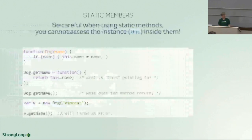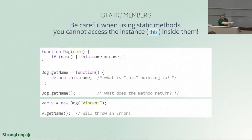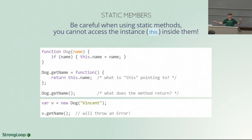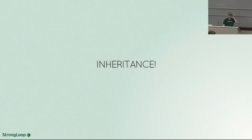Also, if you try to call getName on an instance, you'll get a reference error — because getName does not exist on v, it exists on Dog. Those two things are completely different. Yes, one was created from the prototype of the other, but they are completely disparate things.